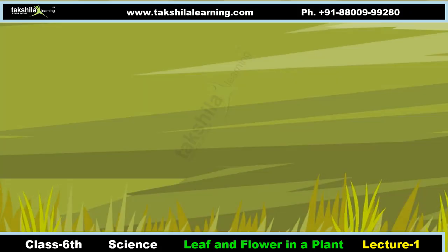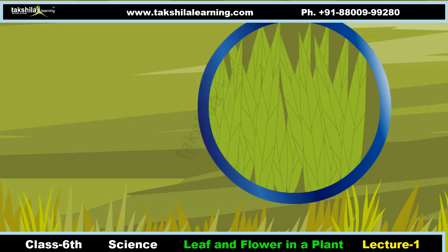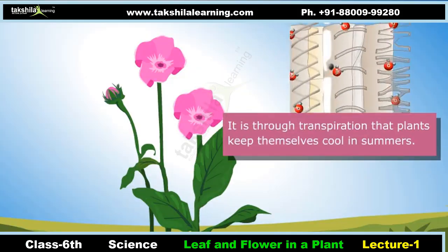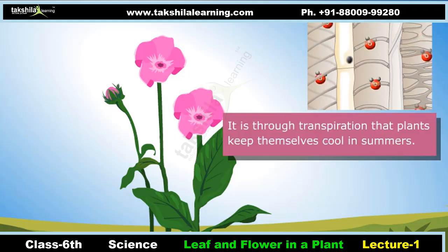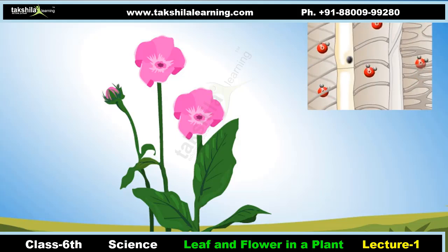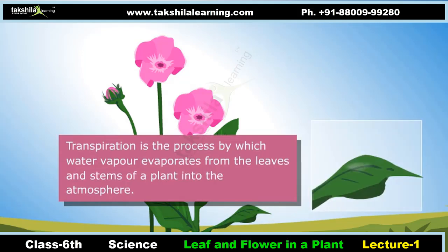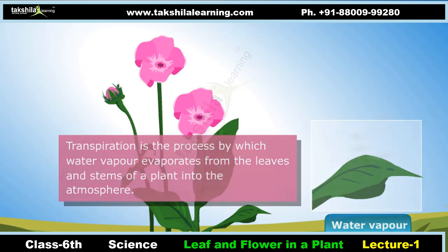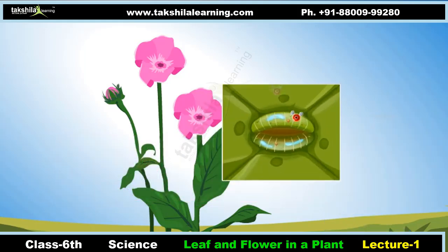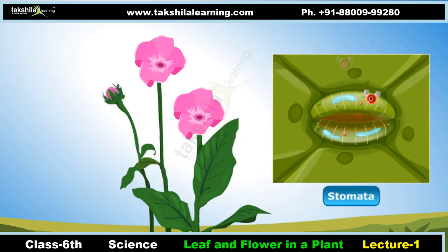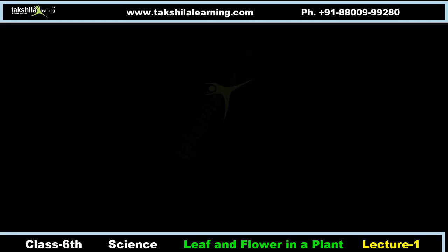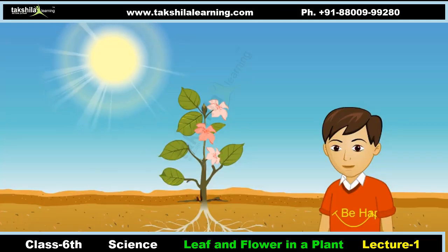When the veins run parallel to one another, the venation is termed parallel venation. This type of venation is generally found in the leaf of grass. An important function of the leaf is to keep the plant cool in summers. This is accomplished through transpiration — the process by which water vapor evaporates from the leaves and stems of a plant into the atmosphere. Small pores called stomata on the underside of the leaves facilitate transpiration.